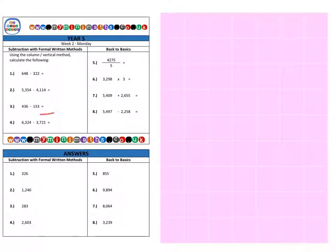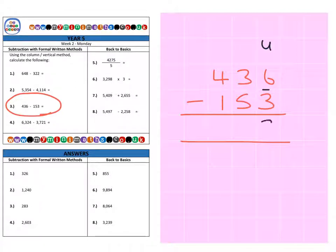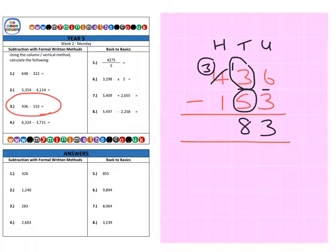Next we're on to question 3. Units: 6 subtract 3 gives us 3. Moving on to the tens — this time we have 30 subtract 50, which obviously we can't do. So we need to move over to our hundreds column and borrow one from the 4. So instead of 400 we've borrowed one of those hundreds to bring it over, leaving only 300 in the hundreds column. That gives us 13 tens take away 5 tens, which gives us 8 tens. And finally 300 minus 100 gives us 200, for a final answer of 283.